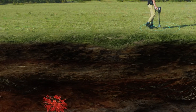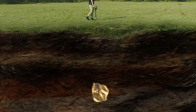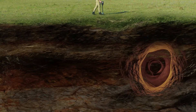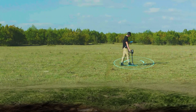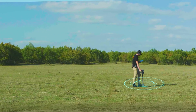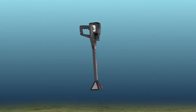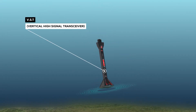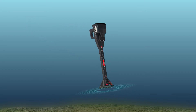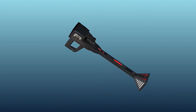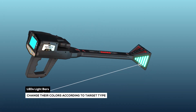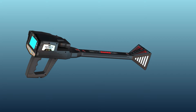For example, precious metal, gold, or tunnel. The signal measurement process, or the scanning process, is done by the VST — Vertical High Signal Transceiver Unit — which is a probe at the end of which there is a quadrilateral cone on both sides, and bars consisting of many light-emitting diodes or LEDs that change their colors according to target type values, depending on the target that the VST probe is passing over at that moment.